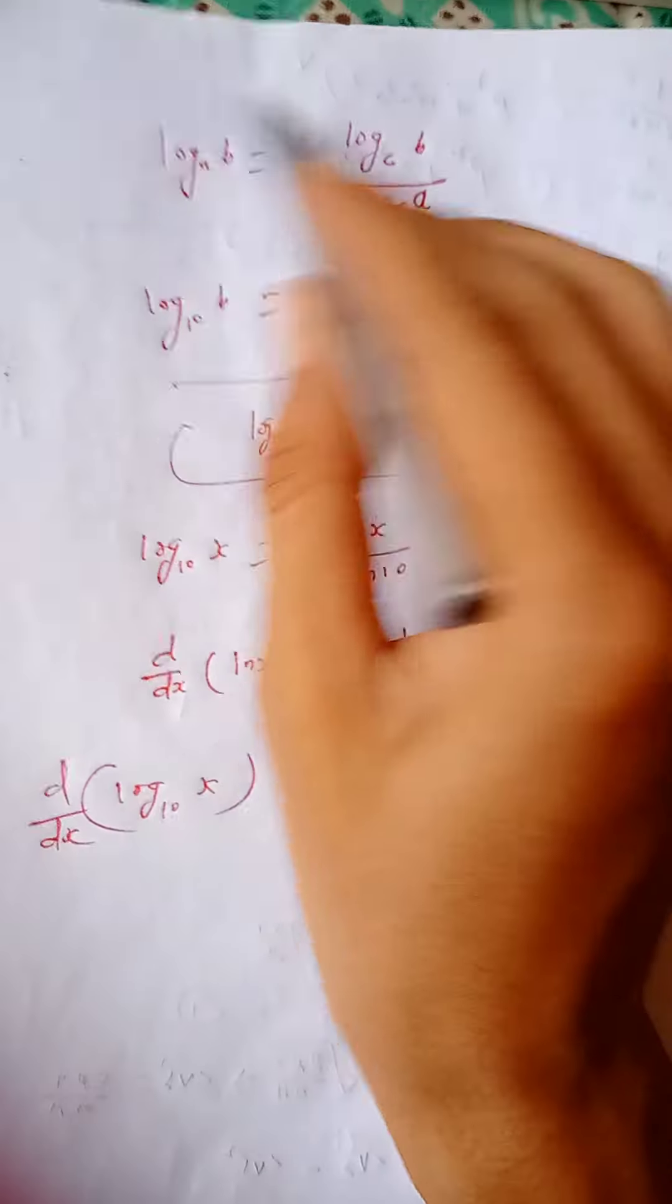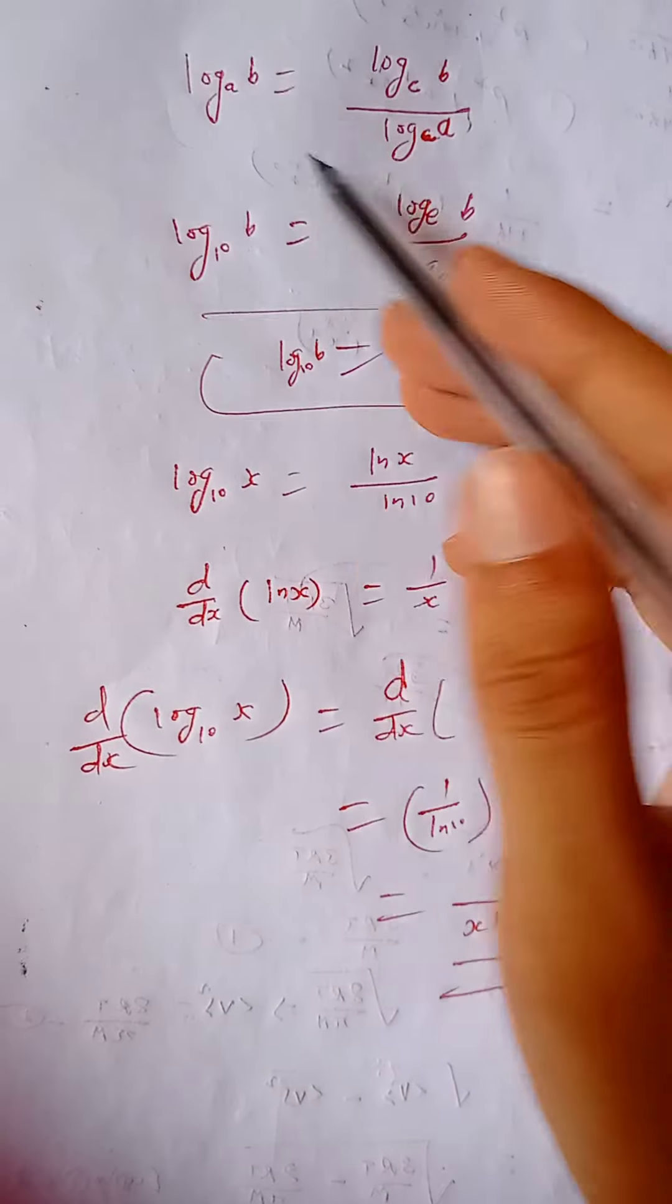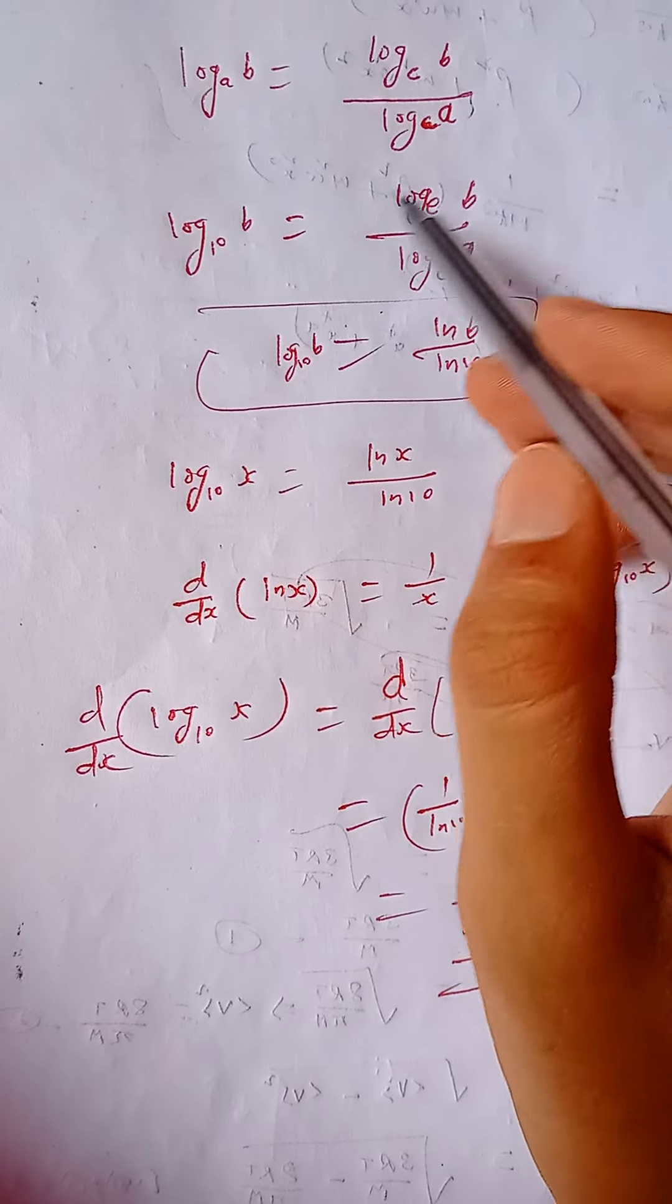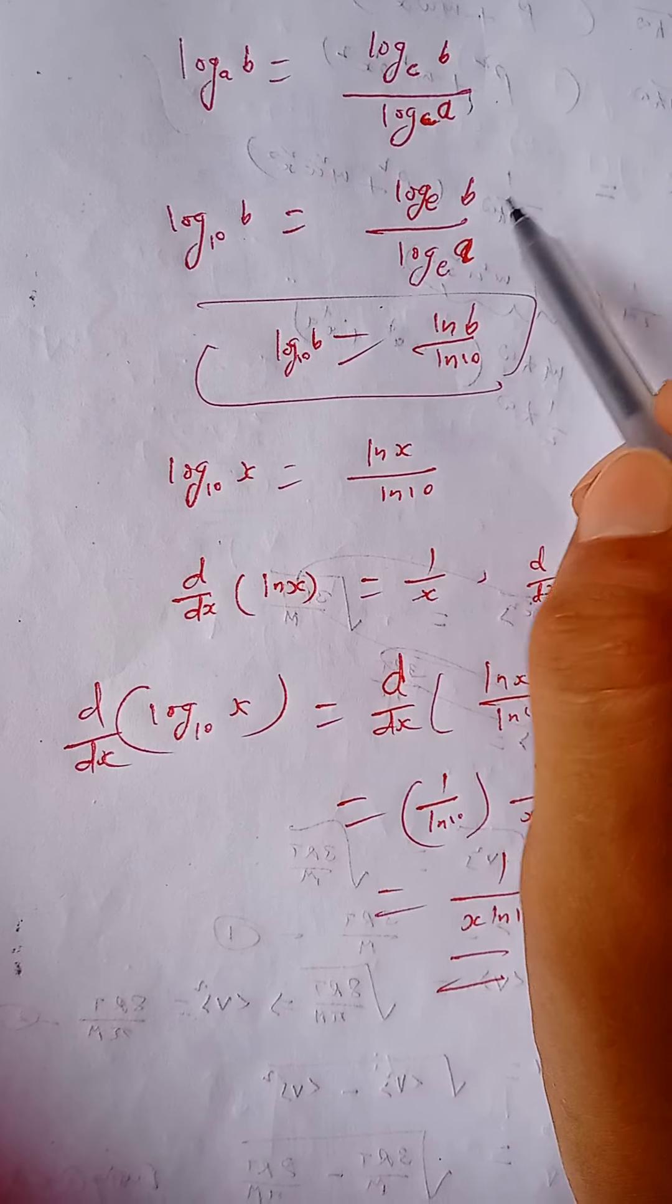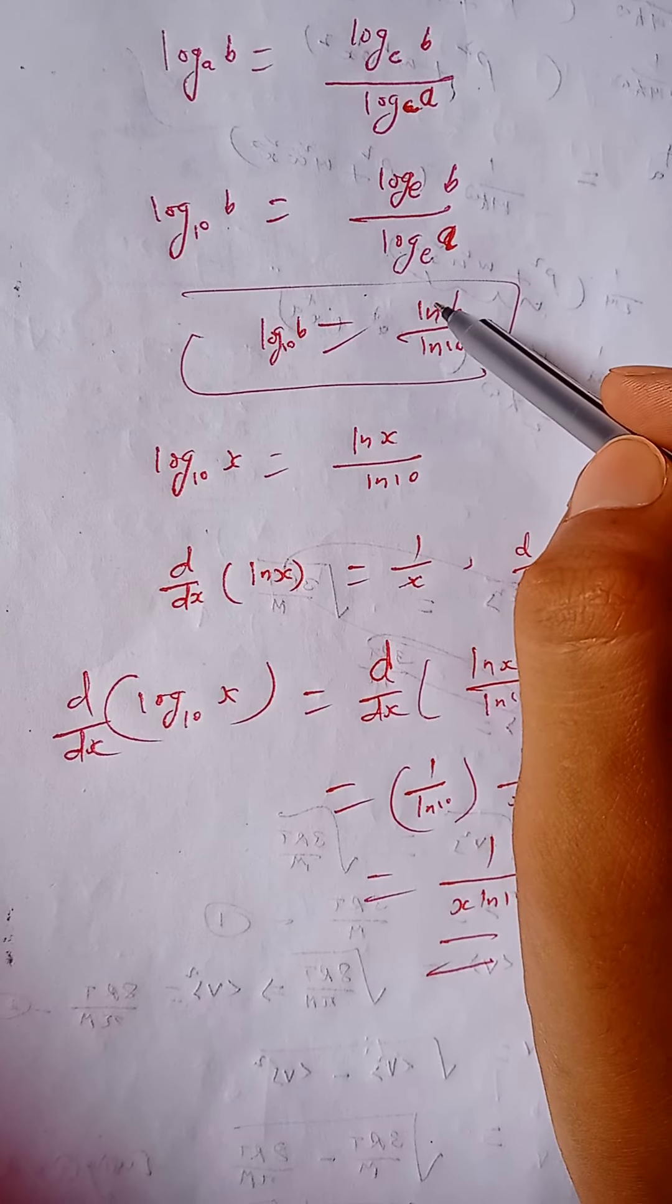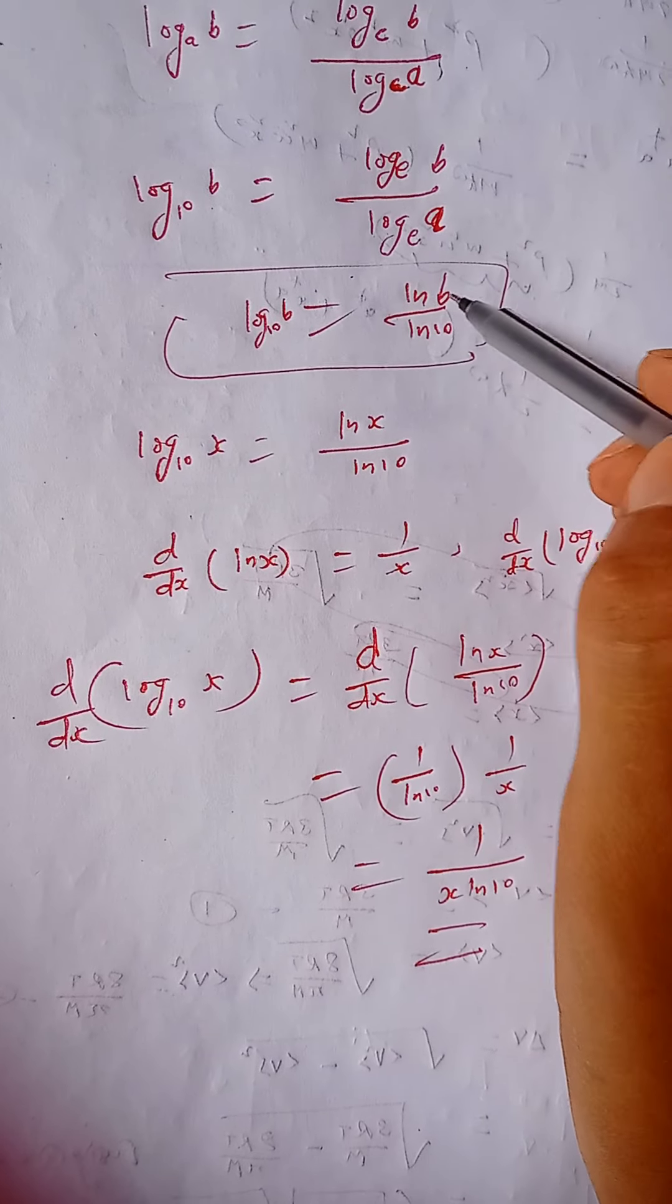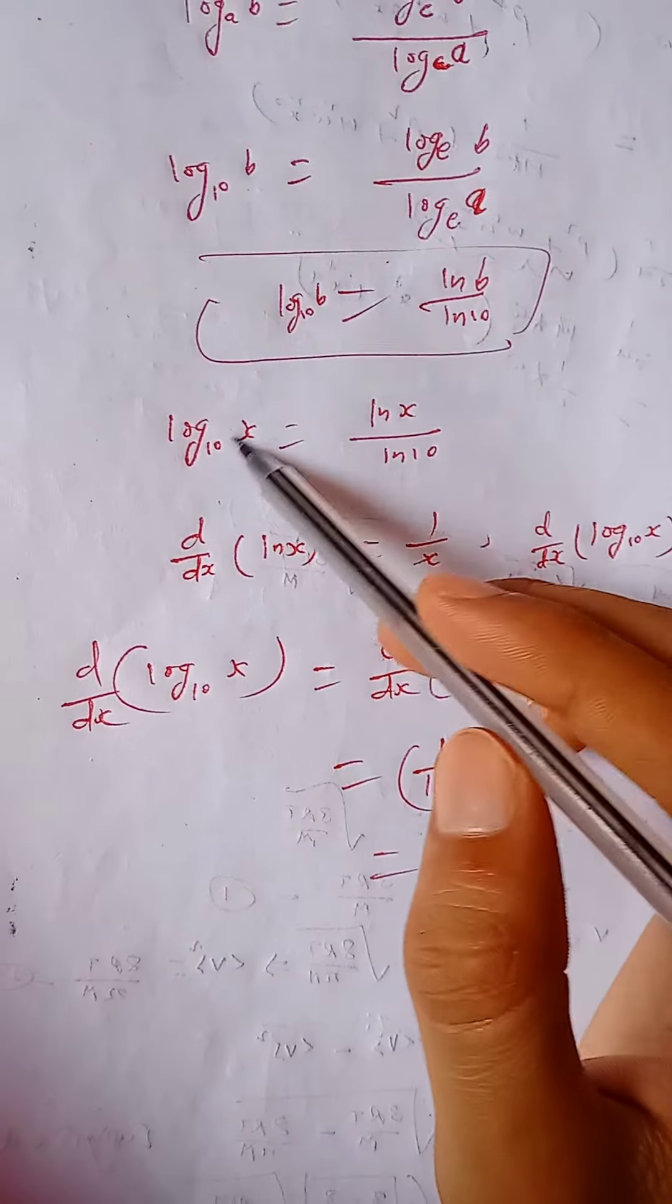So this is the formula which we are going to use. For example, if I replace a by 10 here and if I replace c by e here, we get this one. And you know log of e is called ln, of ln simply, so it becomes ln and so ln by ln 10.